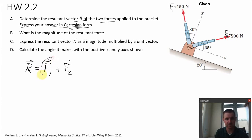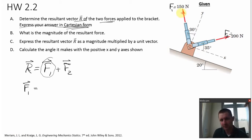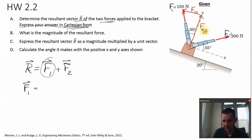So the first step, let's write F1 in component form. Here's F1 — let's show its components. This would be the Y component and this would be the X component. I'll write F1x and this here is F1y.